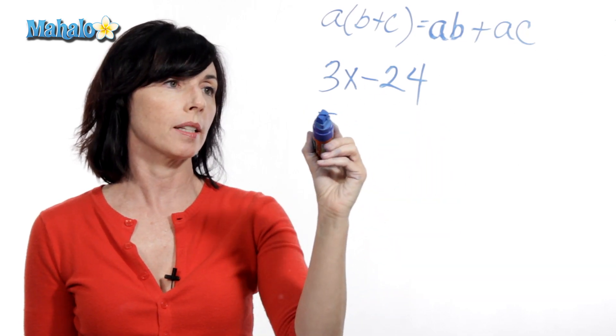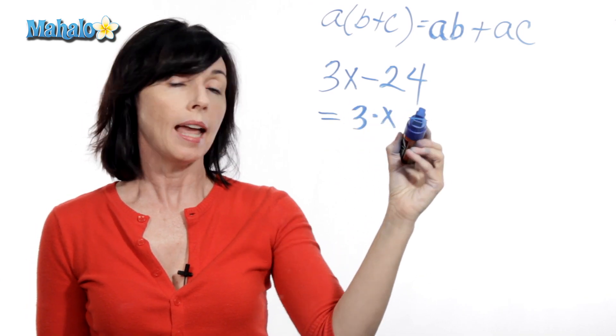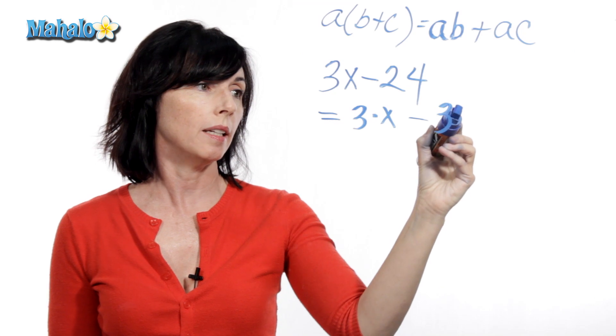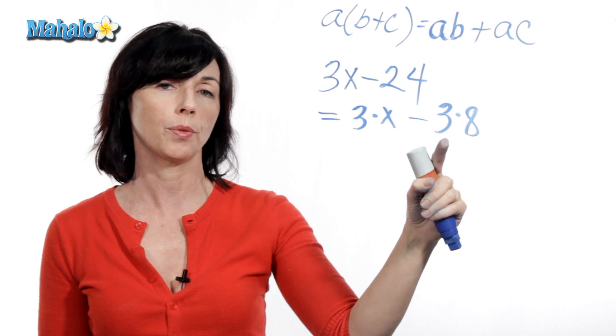So what about this? 3x is just 3 times x. And 24 is 3 times 8. So now I have something in common, a 3 here and a 3 here.